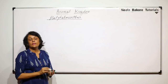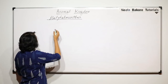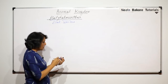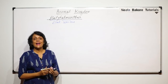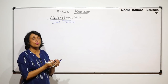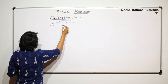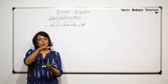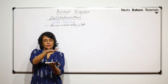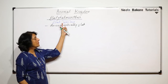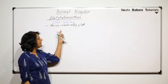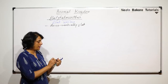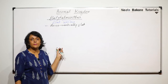The phylum is Platyhelminthes. This word is derived from two words: 'platy' means flat and 'helmin' means worms. So it includes worms which have a flat body — they are dorso-ventrally flat. From the dorsal side and from the ventral side it is going to be flat, so these worms are normally termed as flatworms.